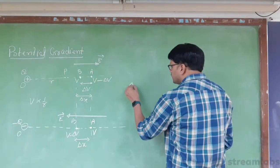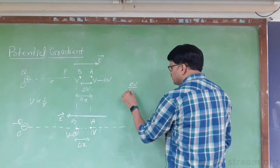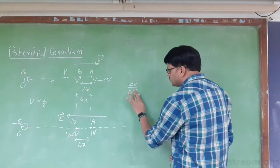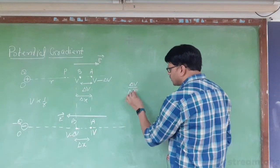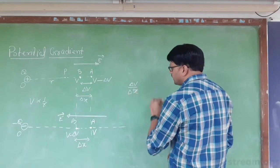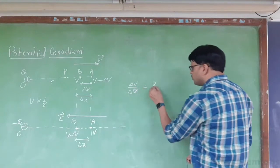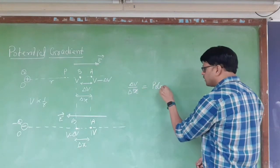This rate of change of potential with respect to distance is known as potential gradient.